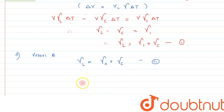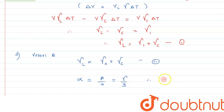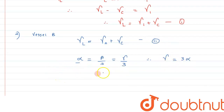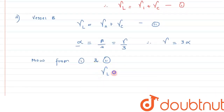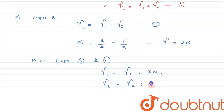We know the relation between coefficient of linear expansion α, aerial expansion β, and cubical expansion γ: γ = 3α. Using this in equations one and two: from equation one, γ_l = γ1 + 3α1 (for vessel A); from equation two, γ_l = γ2 + 3α2 (for vessel B).